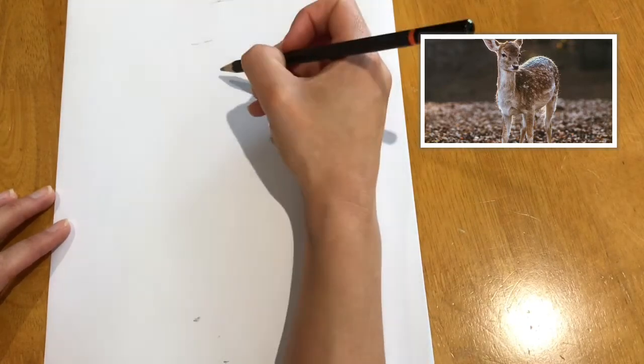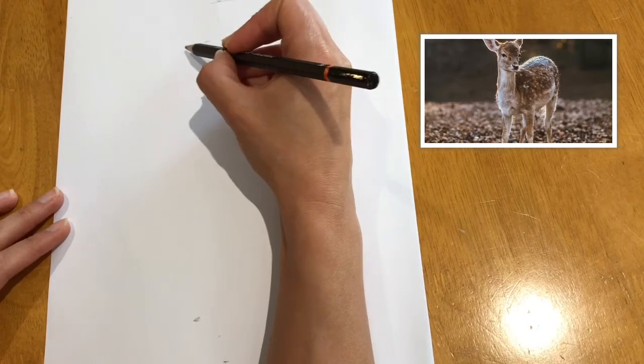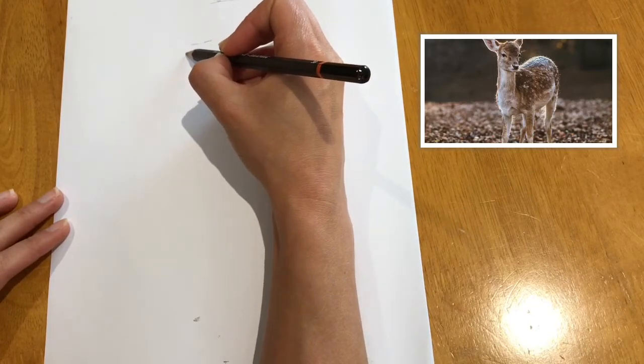We're going to start with drawing the deer's head which is going to be an oval shape. So I'm going to draw an oval shape here.